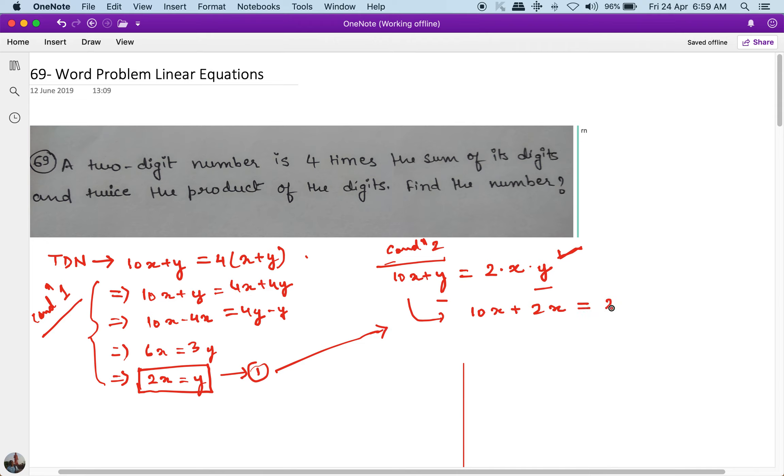So what will happen is this will become 12x is equal to 4x square. 4 divided by 4 will get cancelled, 1x will get cancelled with the x, so we get x equal to 3.